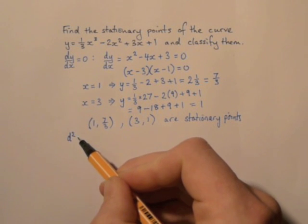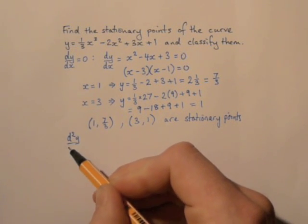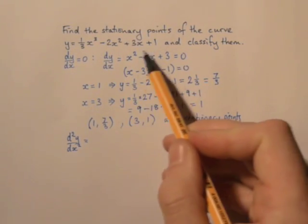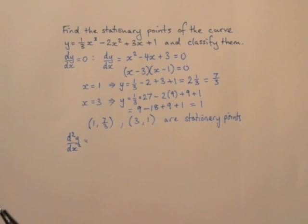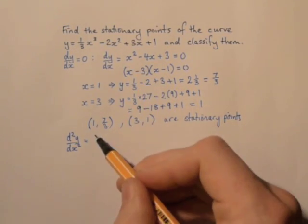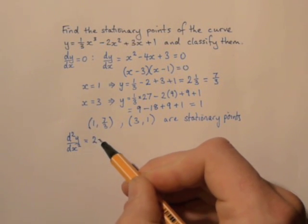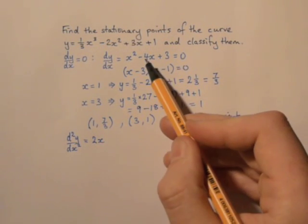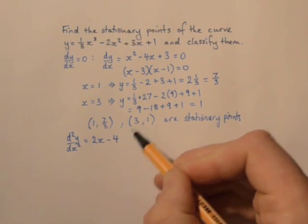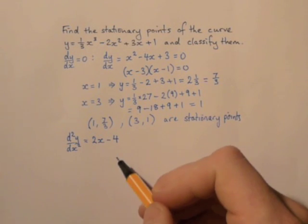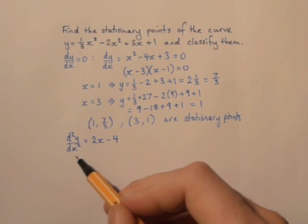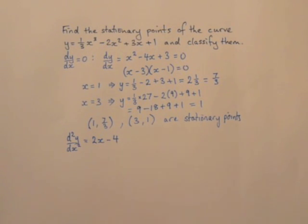So we're going to find the second derivative. That is found by looking at the first derivative and differentiating it again. So differentiating x squared, we'll get two x. Differentiating minus four x, we'll get minus four. And differentiating the constant plus three will go to zero. So the second derivative is two x minus four.